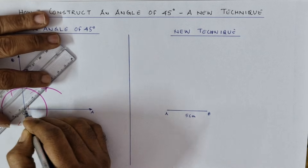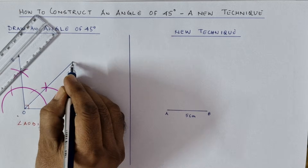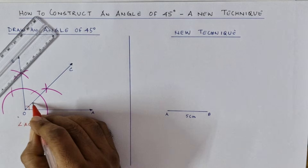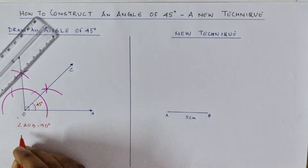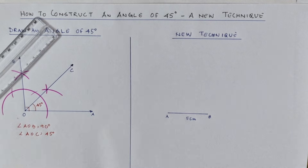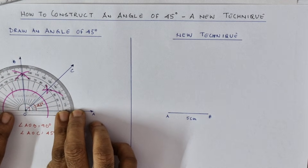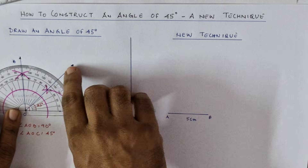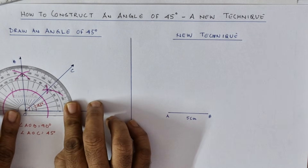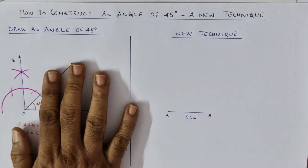Mark the intersection point, point to O, and join it. Name this ray C, so angle AOC is 45 degrees. Let's check it with the protractor — see, between 40 and 50 it's 45. This is the easiest and most familiar way to draw an angle of 45 degrees.